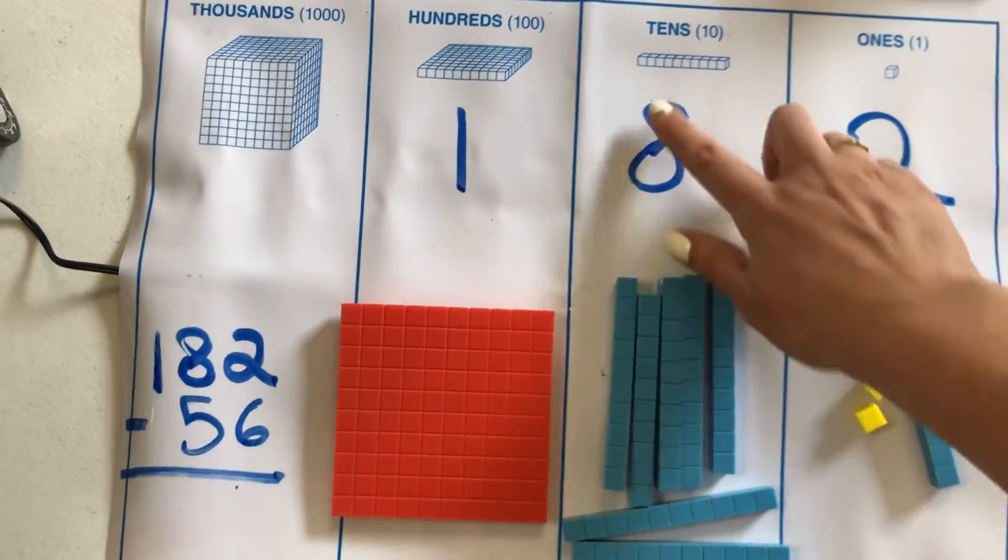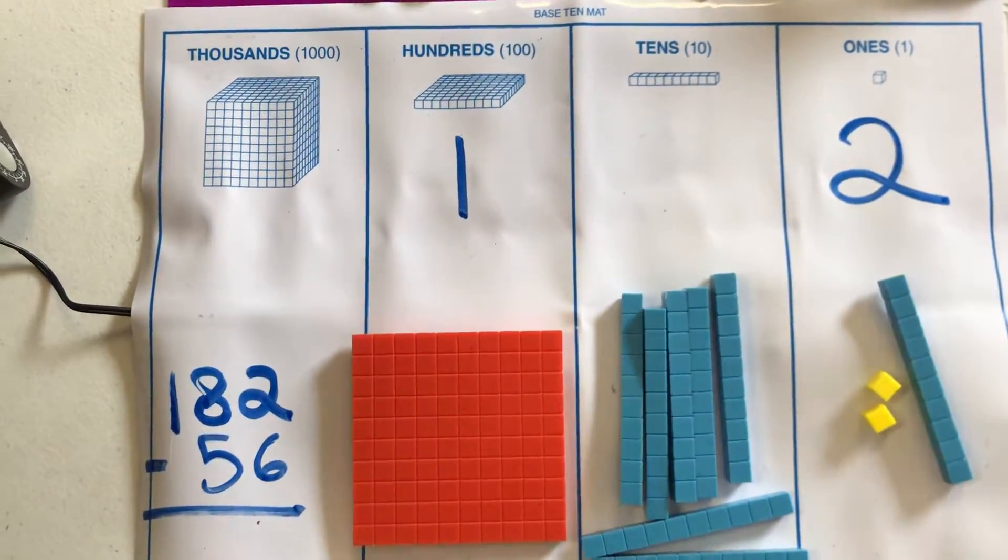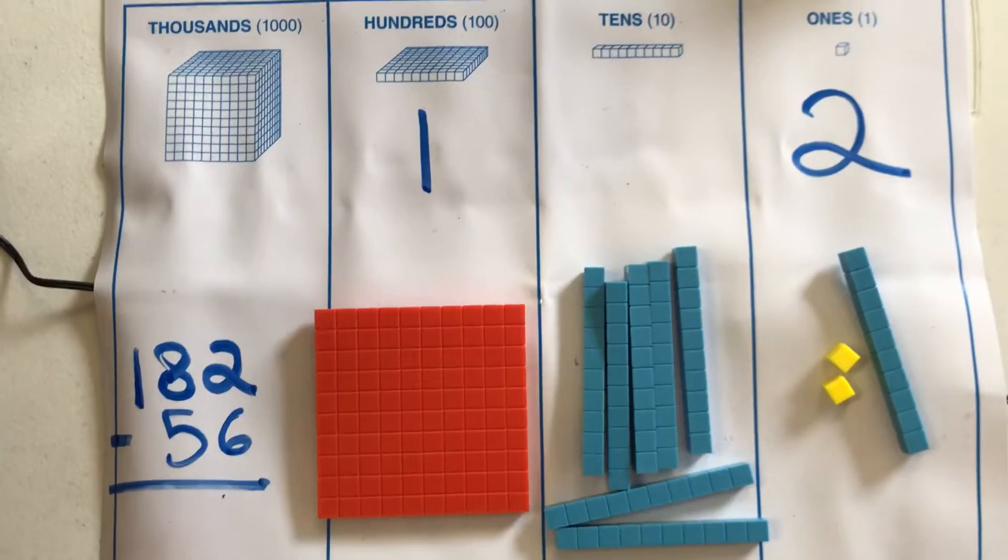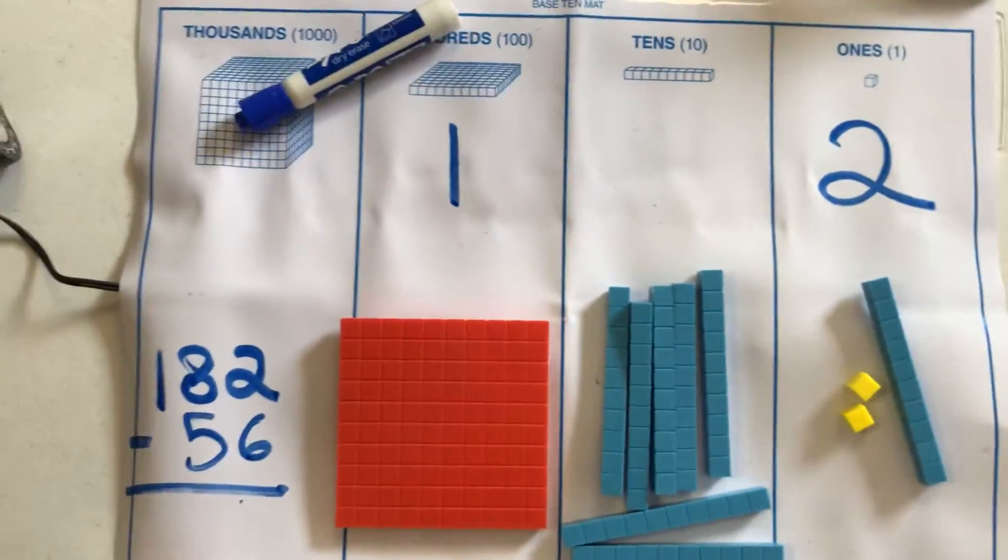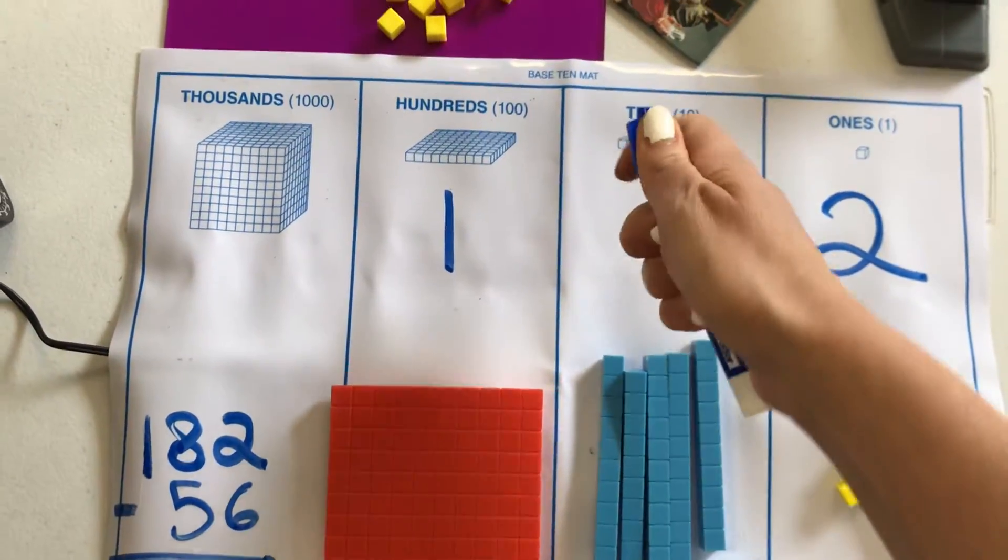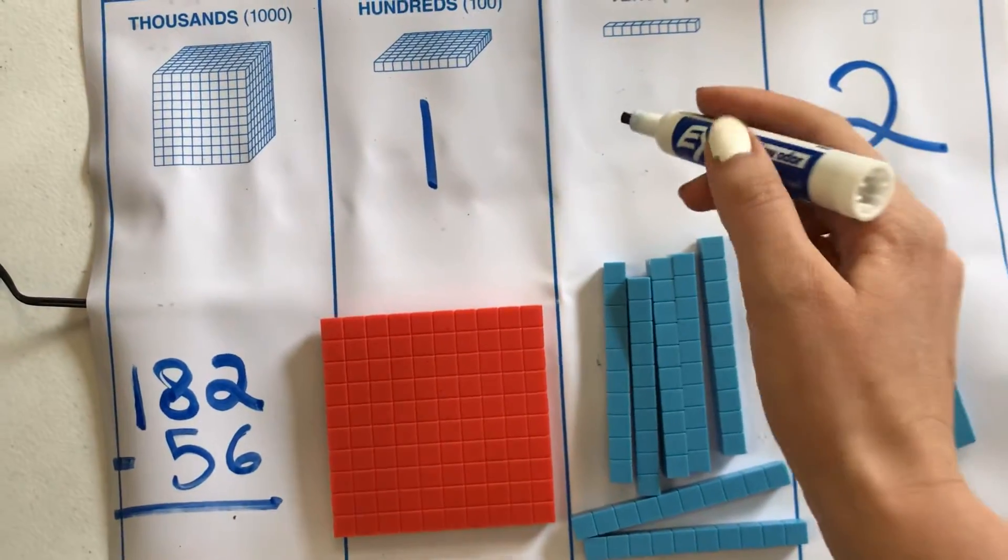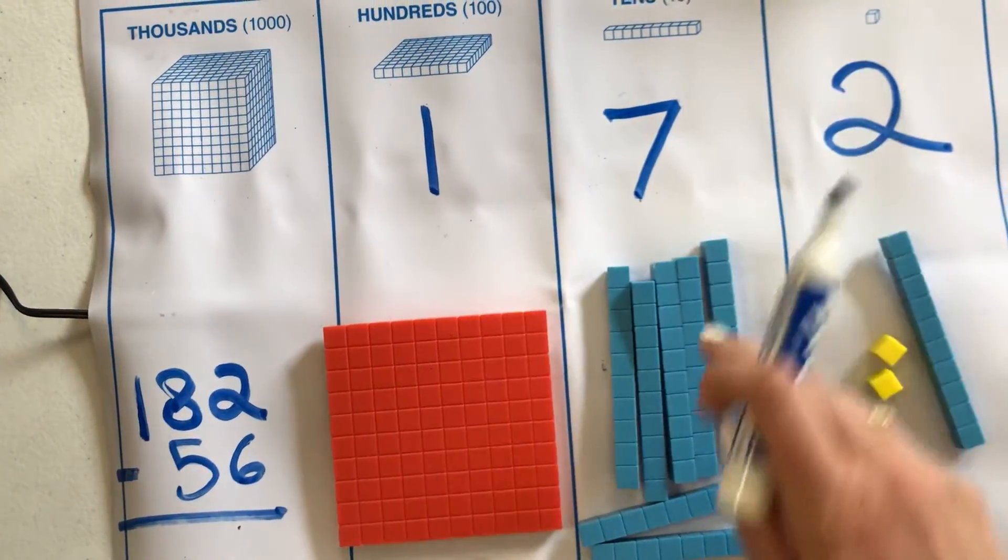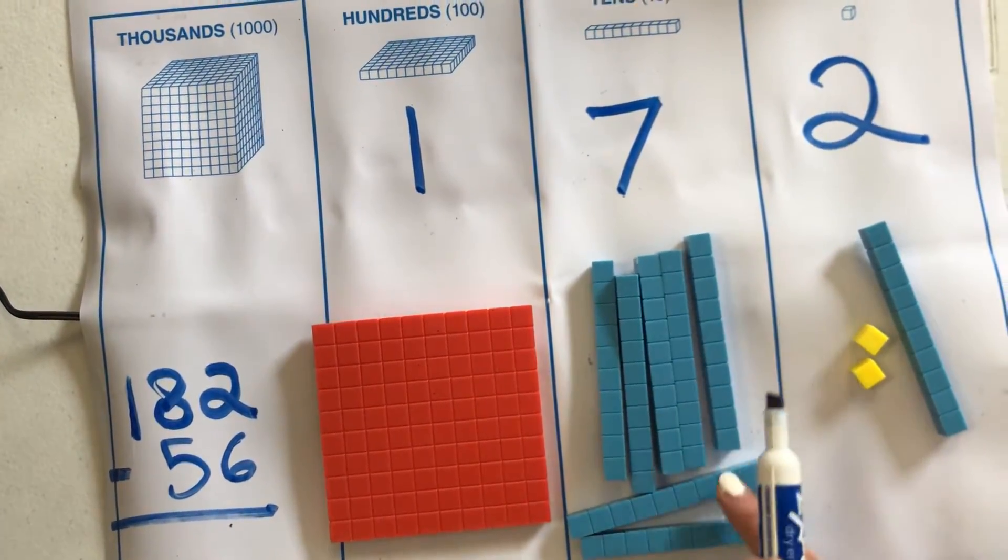Now, this means that I no longer have eight tens. I now only have seven tens. One, two, three, four, five, six, seven.